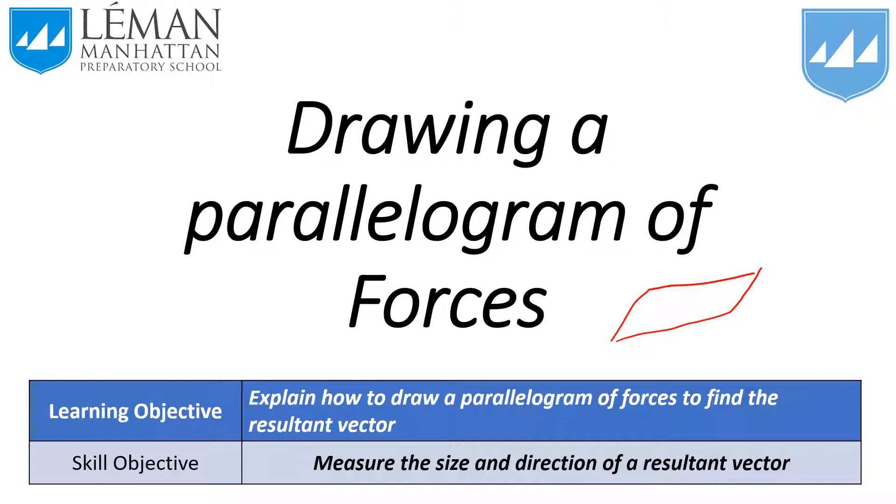We're going to use a parallelogram of forces to combine two vectors, two component vectors—just arrows with size and direction—to find the resultant vector. You're going to need to measure the size of the vector using a ruler and the direction of the vector using a compass.